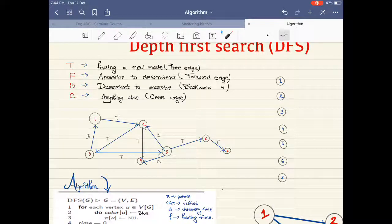And finally, if all of these are not that edge, then it would be the cross edge.